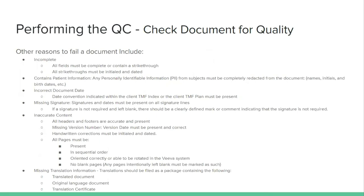For translations, it's kind of a packet — you have the translated document, the original document in its original language, and then usually a certification saying the item has been translated. If the content is inaccurate — as mentioned — signatures are a concern. Typically if you see a signature spot left blank, that's an issue, and we'll go into some exceptions later. PHI — protected health information — you don't want anything related to the patient on these documents, because the sponsor, the company running the study, is not supposed to have exposure to that. It should stay at the doctor's office level.